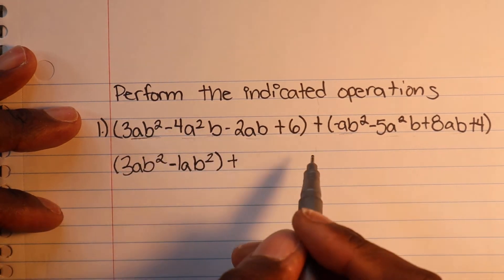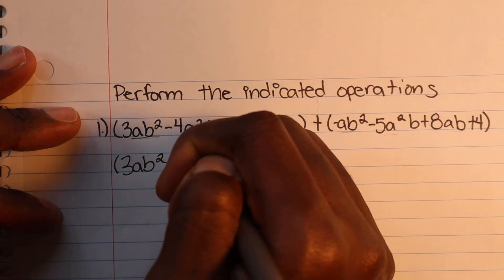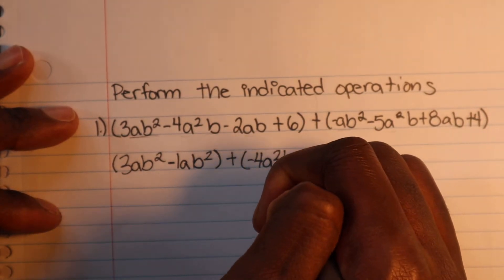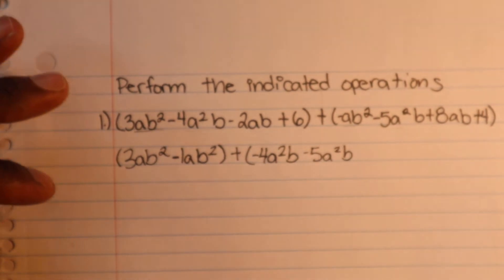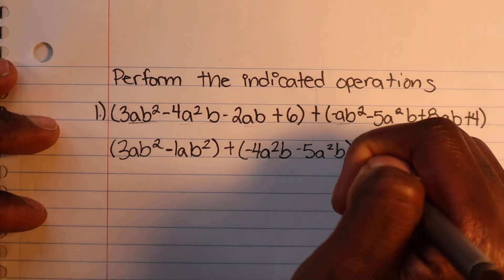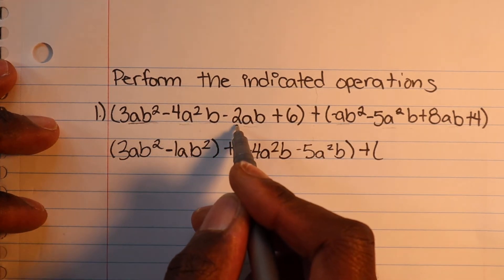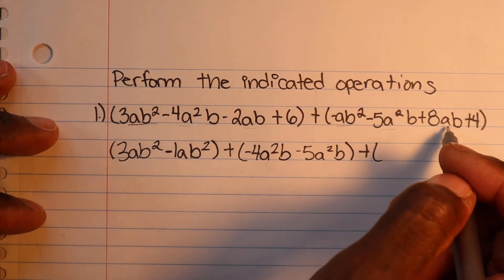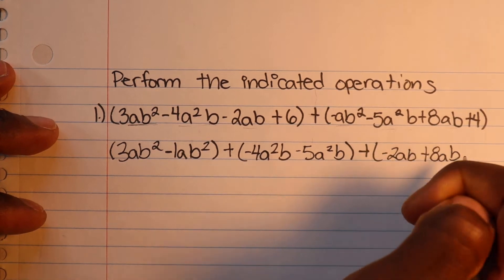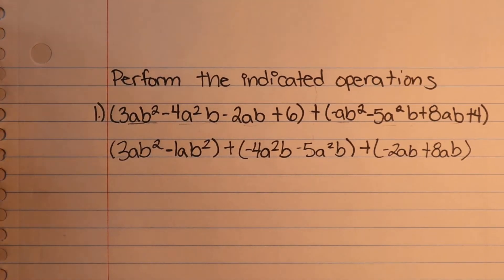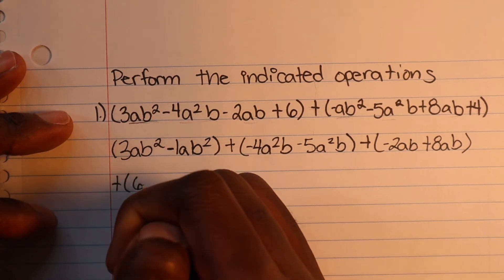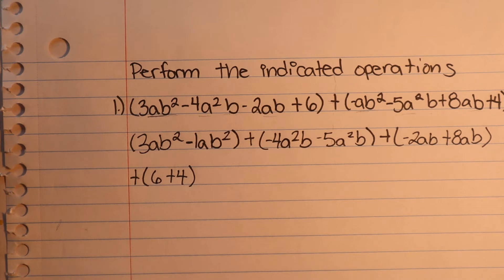Continuing, we're just following the rules. Next for the a²b terms: we have negative 4a²b, then on the other side there's a negative 5a²b. Don't try to overthink or overcomplicate anything. Then for the ab terms: negative 2ab on this side plus ab on the other. And last but not least, we have the constants 6 and 4, so 6 plus 4.